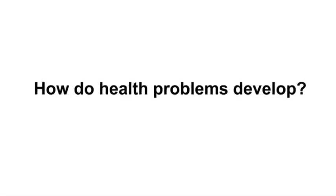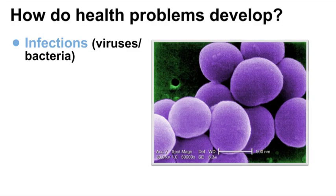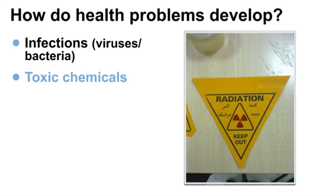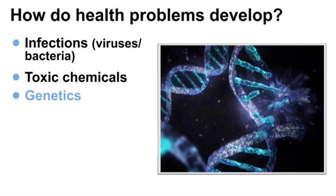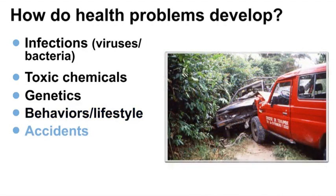Health problems can develop in many different ways. Infections may enter the body from the outside, such as viruses that cause the common cold or bacteria that cause strep throat. People may be exposed to toxic chemicals such as lead or arsenic through their environment or job. An individual's genetic makeup may lead to improper growth, function, or maintenance of their body's systems — for example, type 1 diabetes. Behaviors or acquired risk factors such as smoking, alcohol abuse, inadequate exercise, psychological stress, and poor diet may all contribute to health problems. Other health problems can develop from accidents, such as head trauma caused during a car accident or a fall.